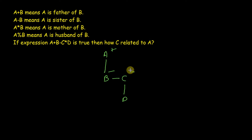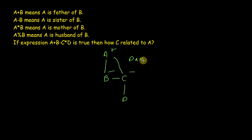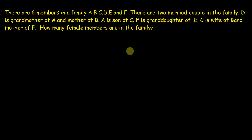Our question is how C is related to A. C is female and she is the sister of B, and B's father is A — so A is also the father of C, making C his daughter. Our answer is daughter.